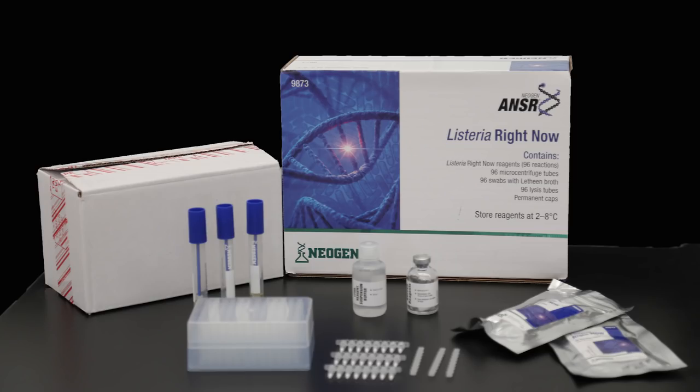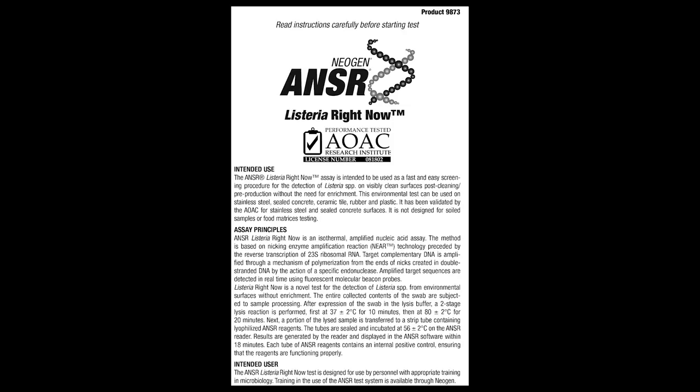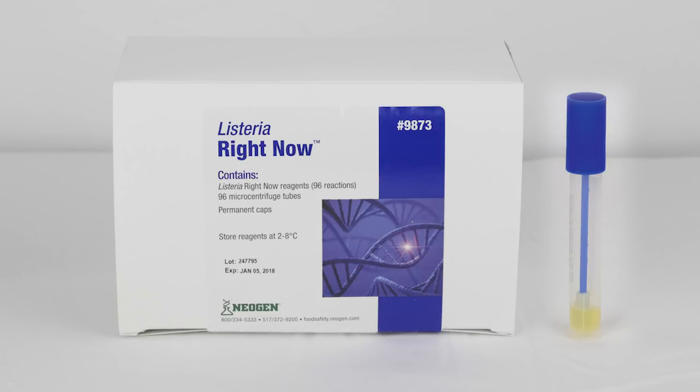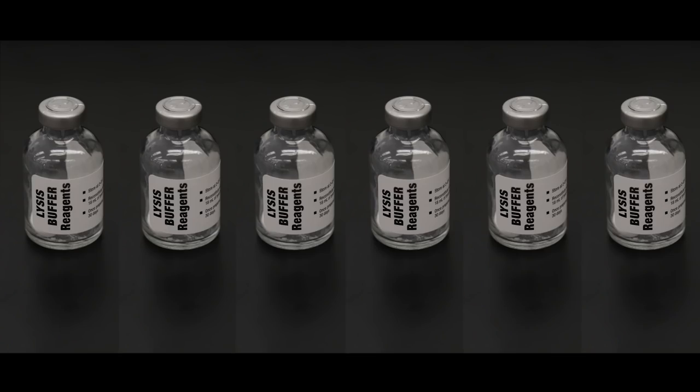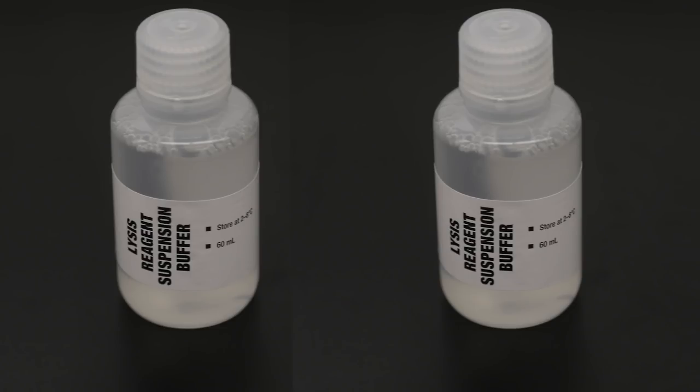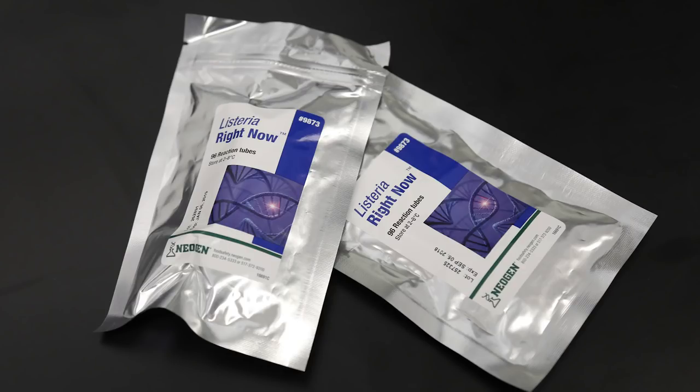What comes in the Listeria Right Now Kit? One kit insert plus additional information on Amplicon. One box of 96 microbiological swabs and one milliliter of lithene broth. One rack of 12 strips of 8 cluster tubes, 1.2 milliliter. Six vials containing lyophilized lysis reagent. Two bottles of lysis reagent suspension buffer, 60 milliliters each. Twelve strips of 8 permanent caps for the reaction tubes. Two sealed foil pouches, each containing 6 reaction tubes with lyophilized answer-right-now reagents in a desiccant pouch.